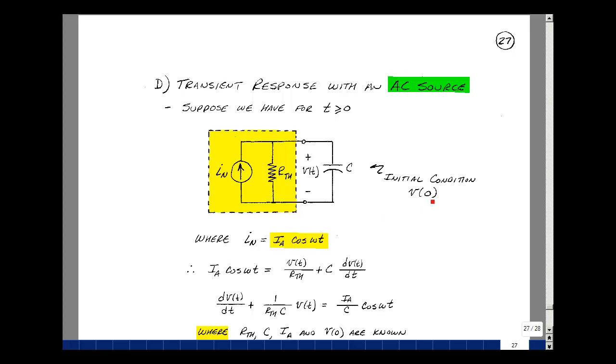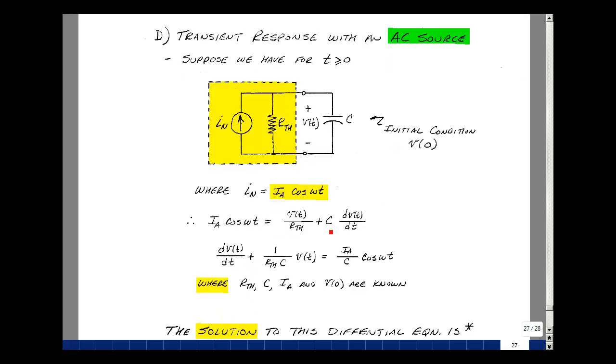Let's write the differential equation for this circuit. The current that enters the node is I sub N. What leaves is V divided by R thevenin. And then what leaves in here is going to be C dV/dt. I'll replace I Norton by its sinusoidal expression of I sub A cosine of omega T. Divide both sides of the equation by C. Let's have dV/dt, V of T divided by R thevenin C, and then I sub A divided by C cosine of omega T.